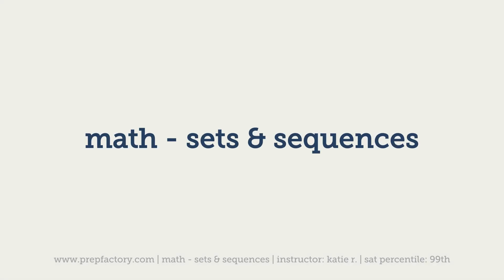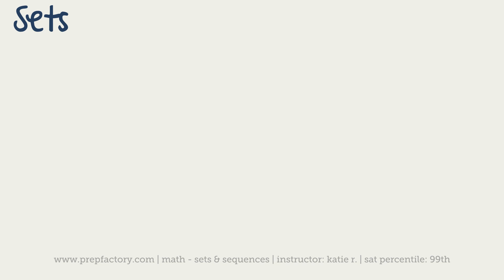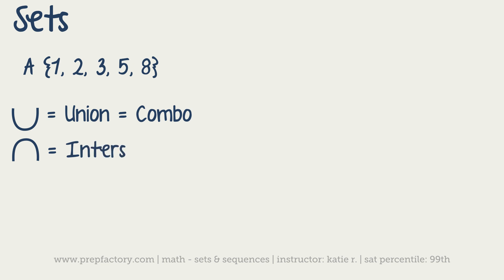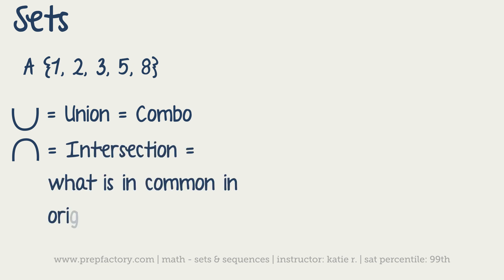The next thing to learn is about sets. A set is just a collection of numbers — for example, {1, 2, 3, 5, 8} could be a set. The important thing is knowing how to combine them. The union of sets is when you combine both original sets together, and the intersection is when you look only at the things that overlap — only what both sets have in common.